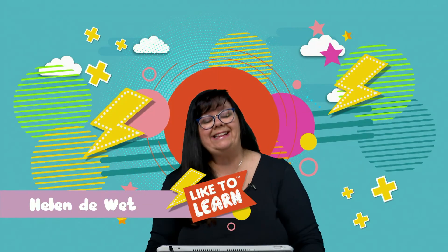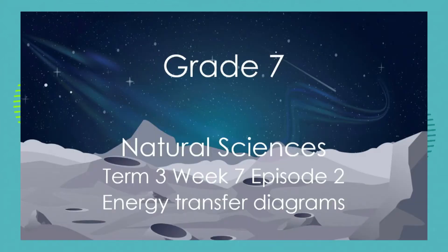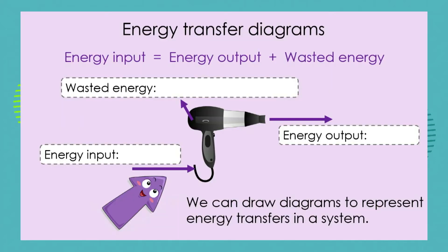Hello grade 7s, Helen here, and it is time for another natural sciences lesson. Today we're going to look at energy transfer diagrams. In our last lesson, we spoke about useful energy and wasted energy. We looked at different appliances such as a hairdryer and worked out the energy input, the useful energy output, and the wasted energy output.